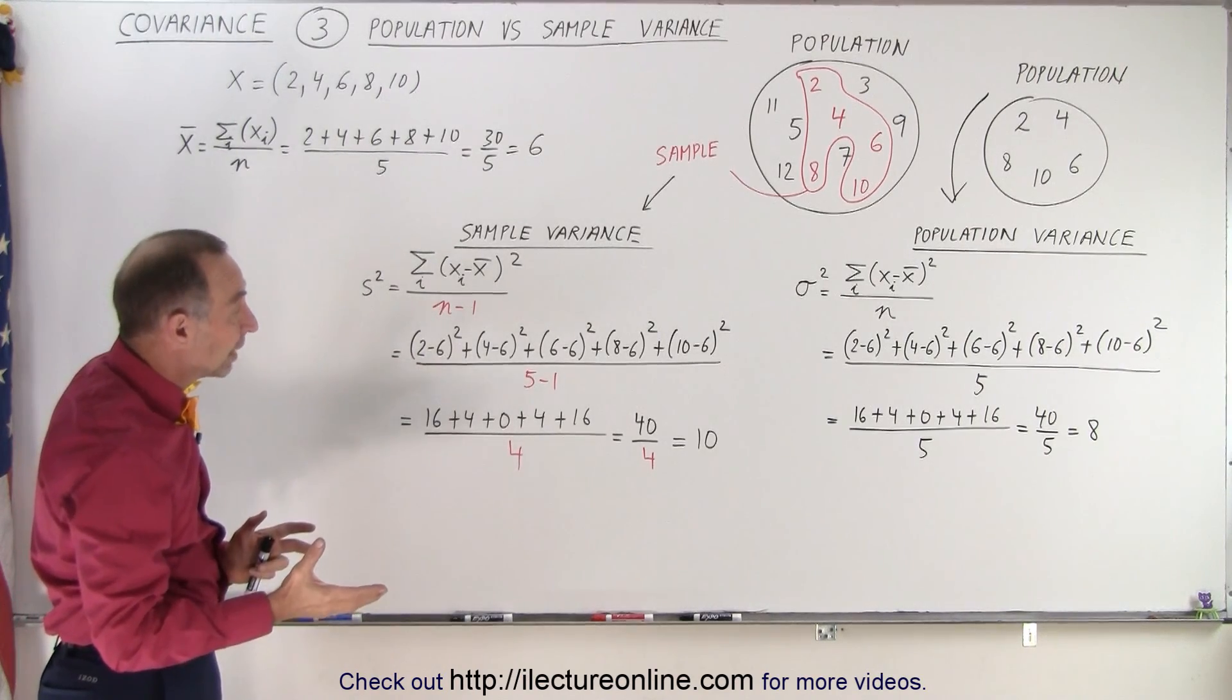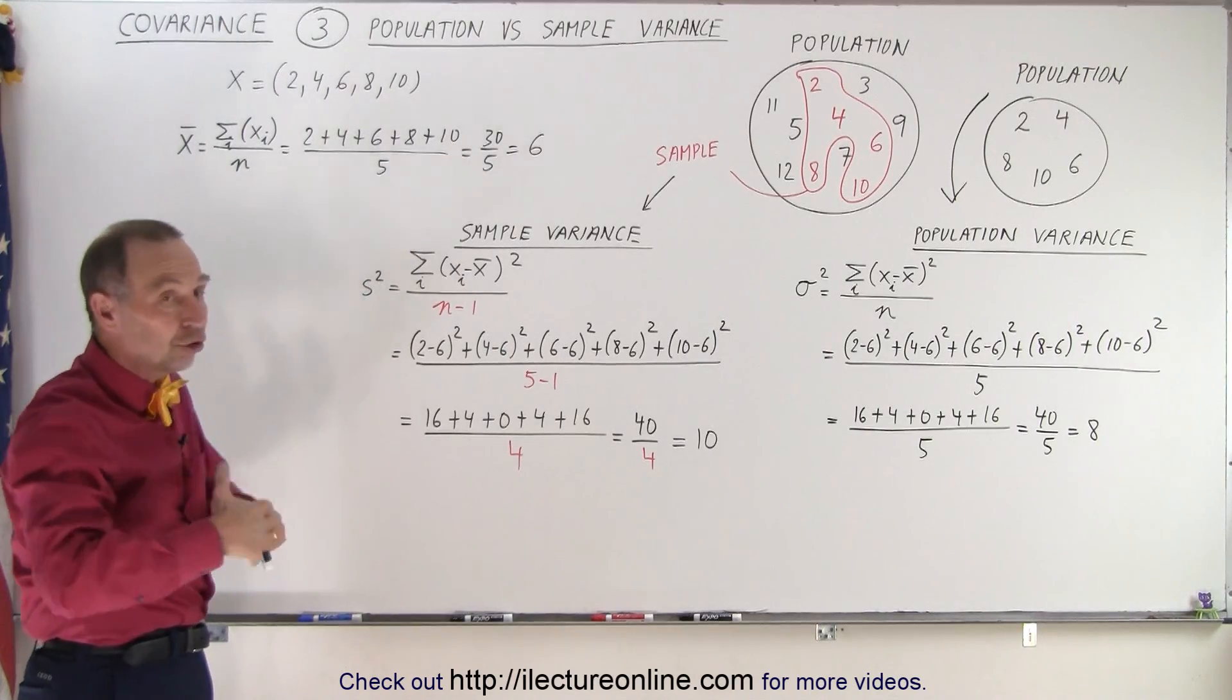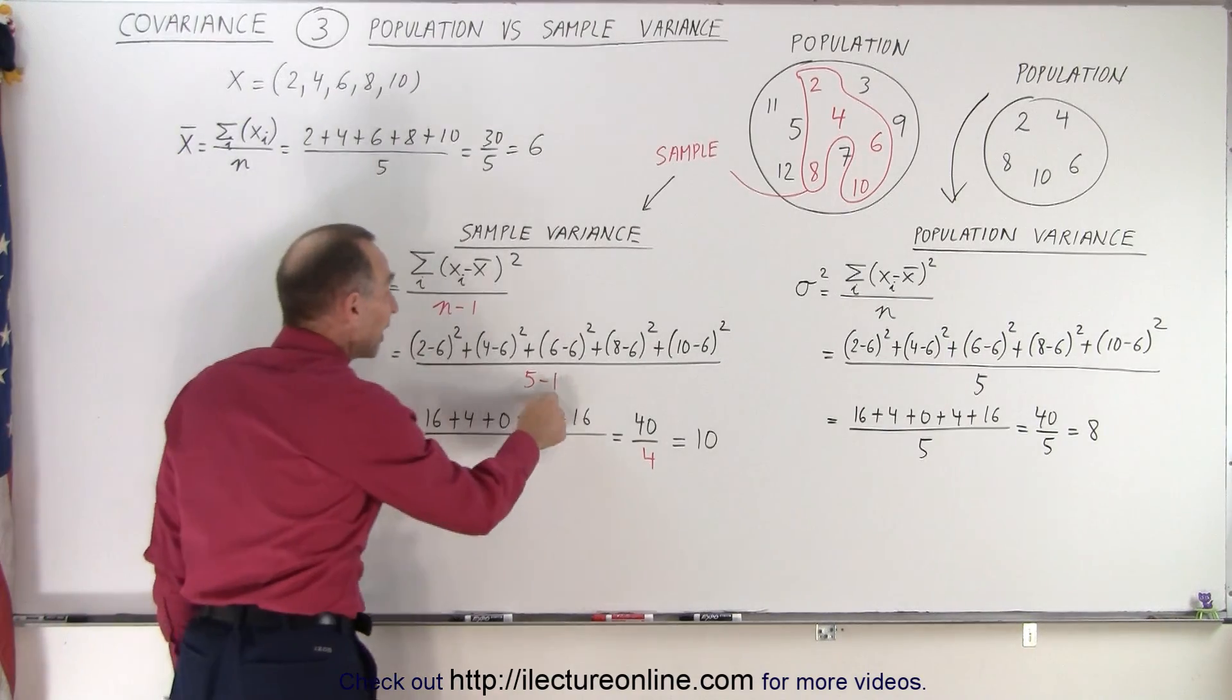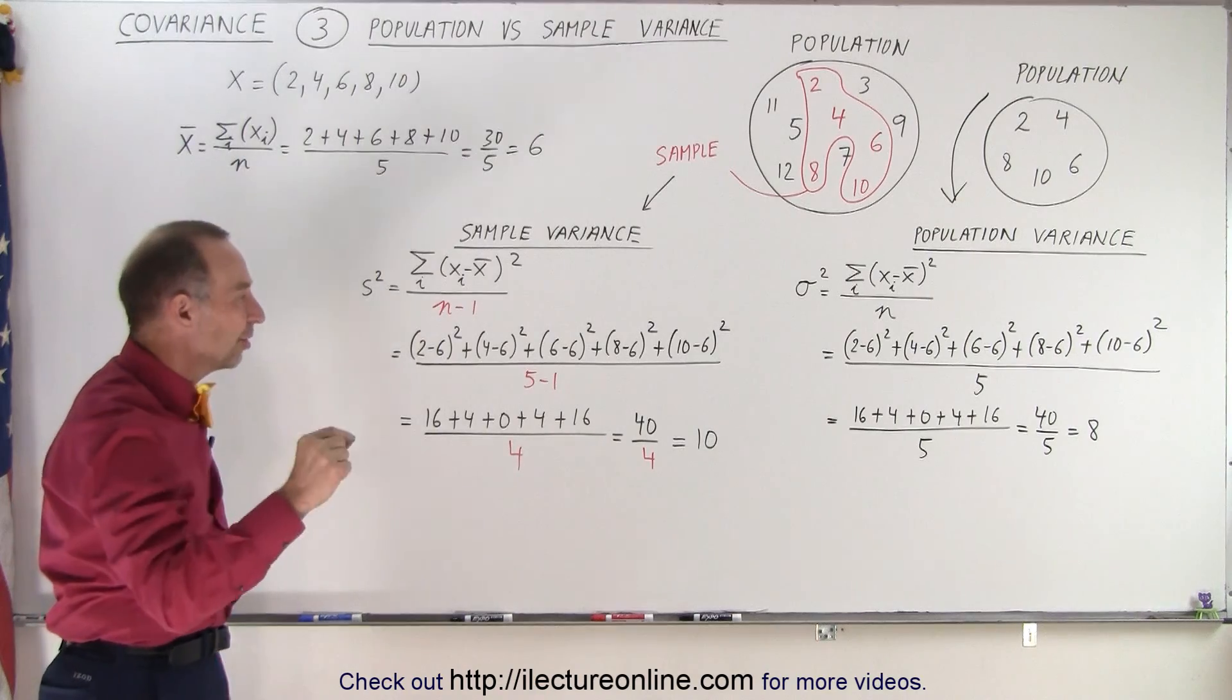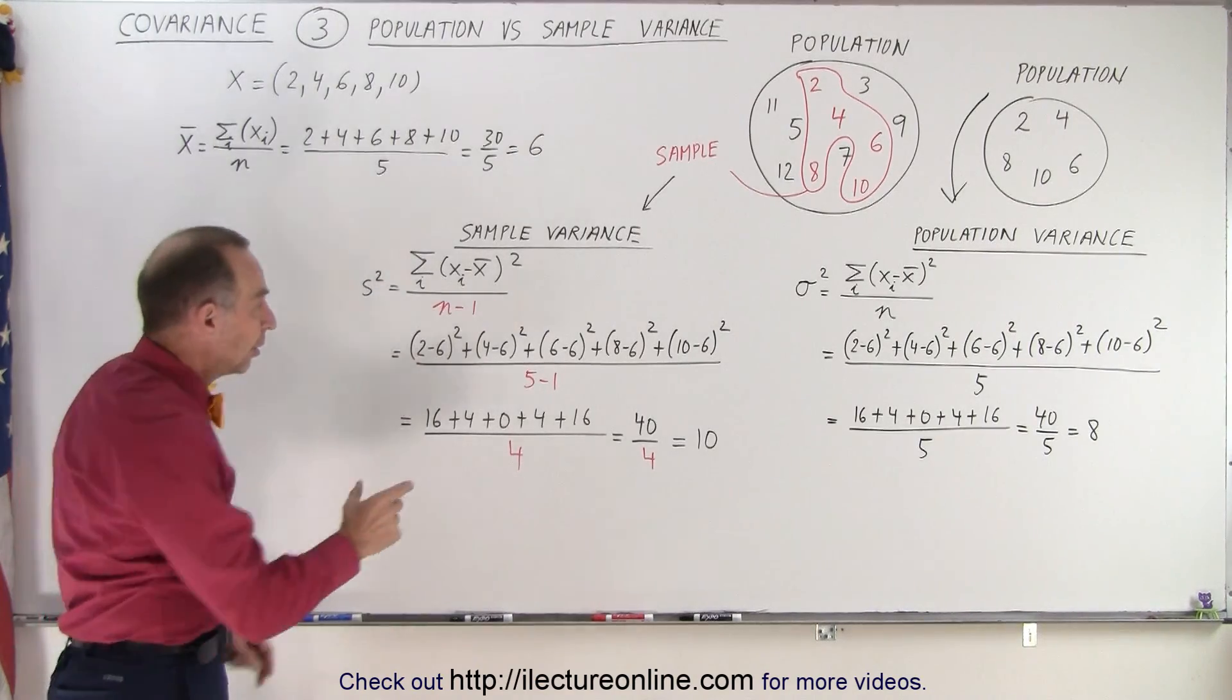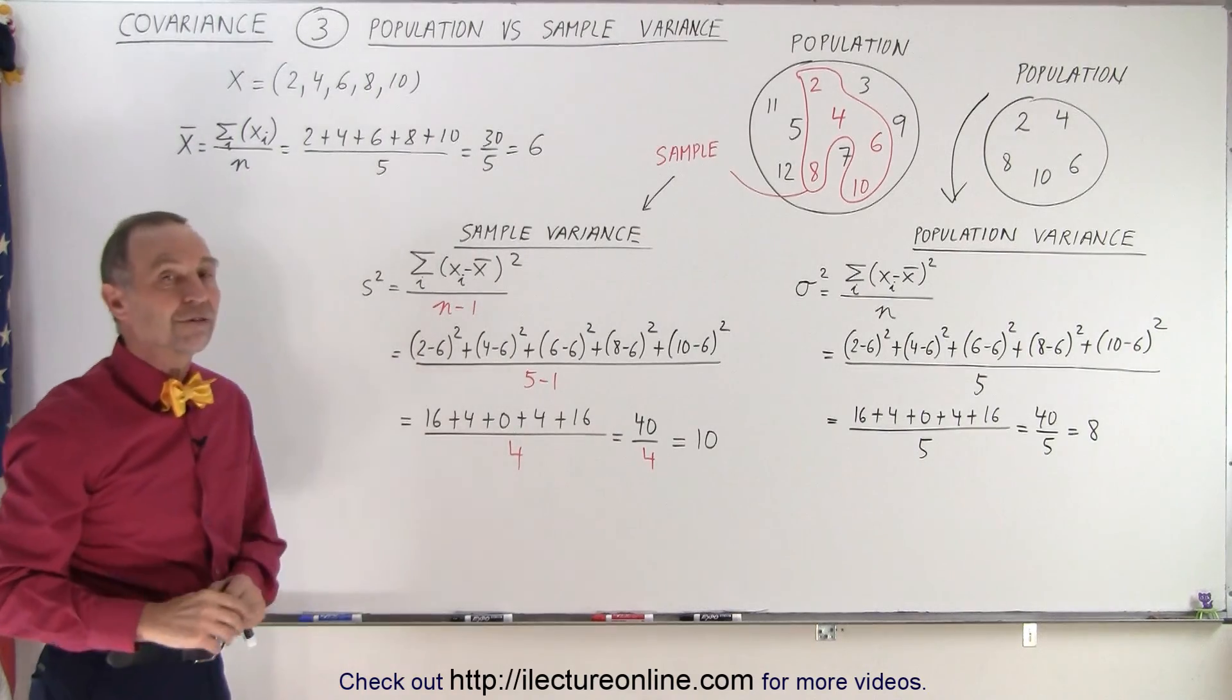Notice, though, that if the numbers that we pull out of the population is larger, let's say we pull 10 out, or 20, or 100, or 1,000 numbers, well, 1,000 minus 1 is 999. That's going to be almost the same result as if we had put 1,000 in the denominator. So the more numbers we pull out of the population as a sample, the less effect it's going to have in our final calculation for the variance.